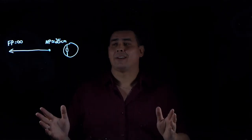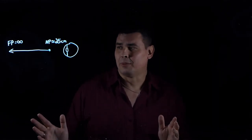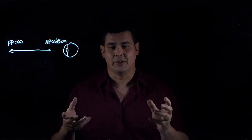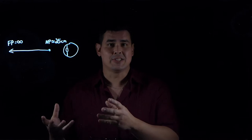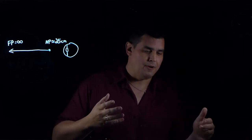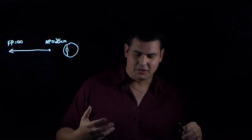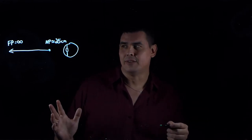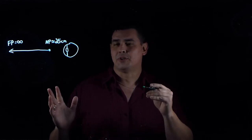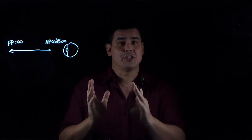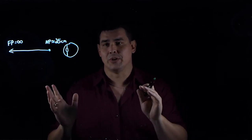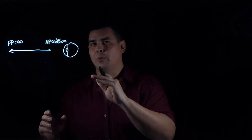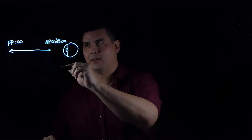Let's practice solving some problems involving vision correction — either correcting nearsightedness, which is called myopia, or farsightedness, which is called hyperopia. For all of these, we're just using the lens maker's equation, and your image distance and your object distance are always going to be the key variables.